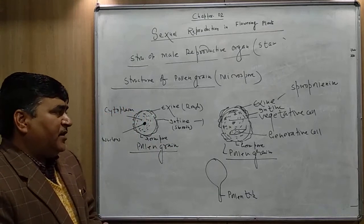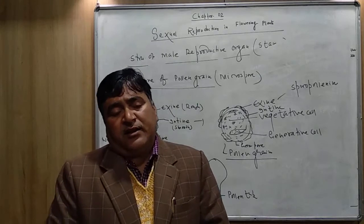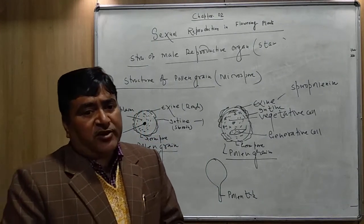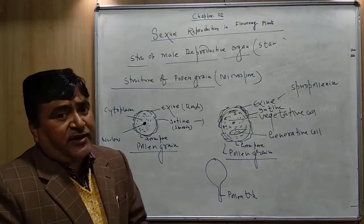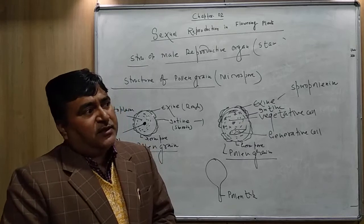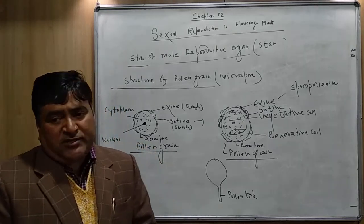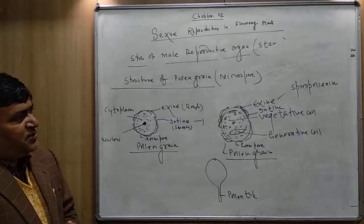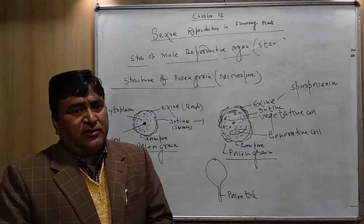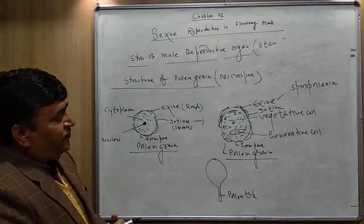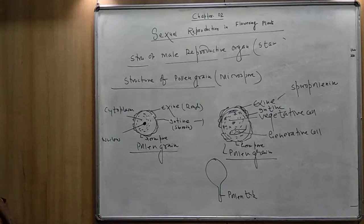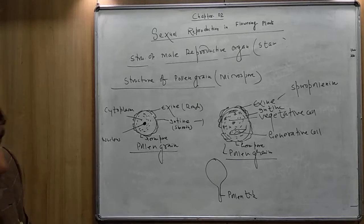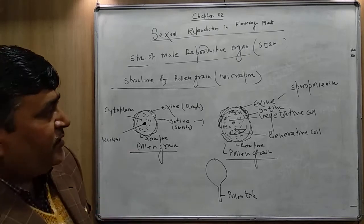Overall, pollen grains are also useful for human beings because they contain many nutrients. In western countries pollen grains are used as a food supplement. However, pollen grains can also be harmful — for example, the pollen grains of carrot grass (Parthenium), which came to India as a contaminant, cause allergy and asthma. So pollen grains are both useful and harmful to human beings.